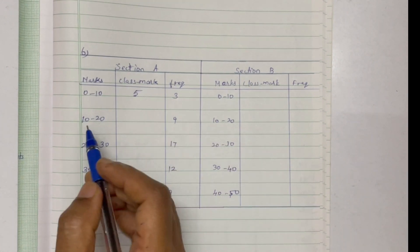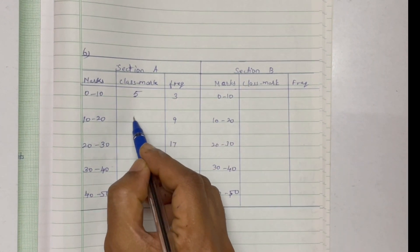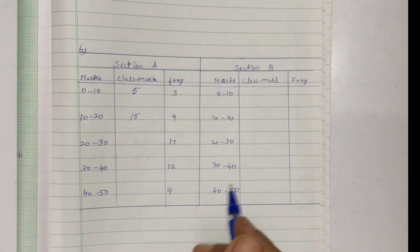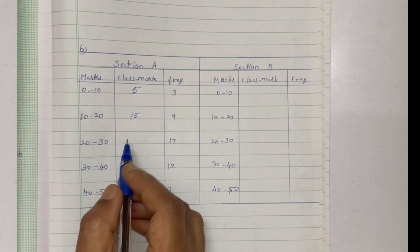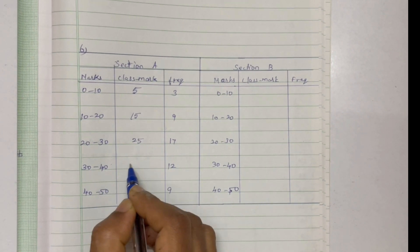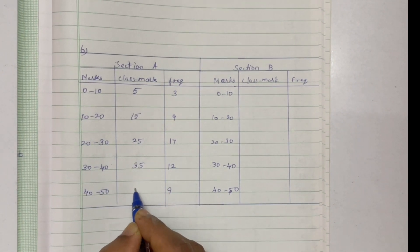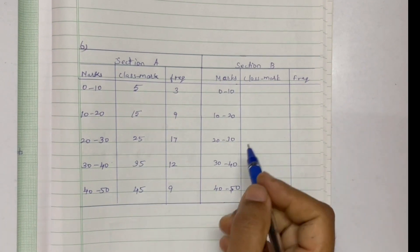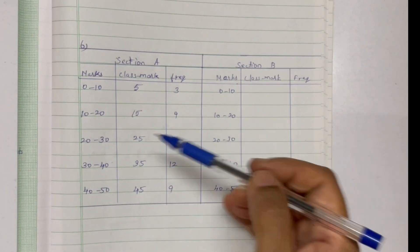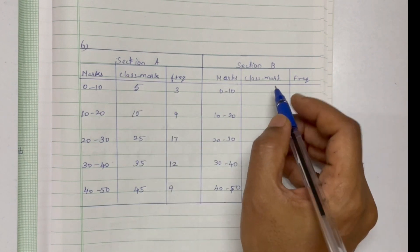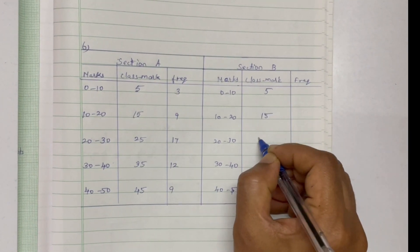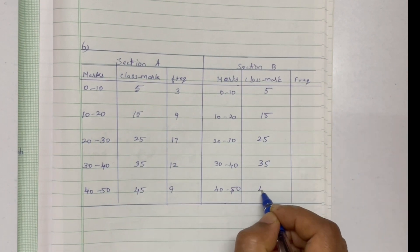The class marks are calculated as upper limit plus lower limit divided by two. The values are: 5, 15, 35, and 45. For Section B, the class marks are the same: 5, 15, 25, 35, and 45.